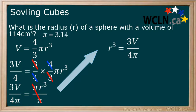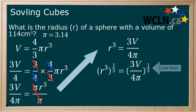The next step is to raise both sides to the power of 1 over 3. 1 over 3 is also known as a cube root. Using the power of a power rule we multiply our exponents together to get 1 and r to the power of 1 equals r.